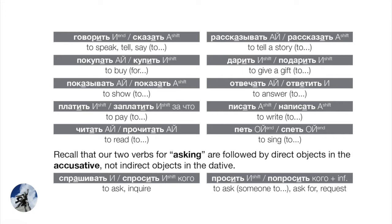To avoid a common misunderstanding: verbs of asking don't take the dative — they take direct objects in the accusative. We have two verbs for asking that are often confused. Спрашивать/спросить means to inquire — it's always about asking for information, asking questions. Whereas просить/попросить is more like requesting — asking someone to do something. Просить/попросить never involves a question mark; it's not about questioning but about asking someone to do something. Learn those two pairs and note the difference carefully.